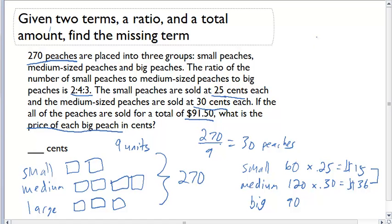So how much money do we have left for the large? We have $91.50. We subtract out the $51. We know that we had to have sold $40.50 on large peaches.